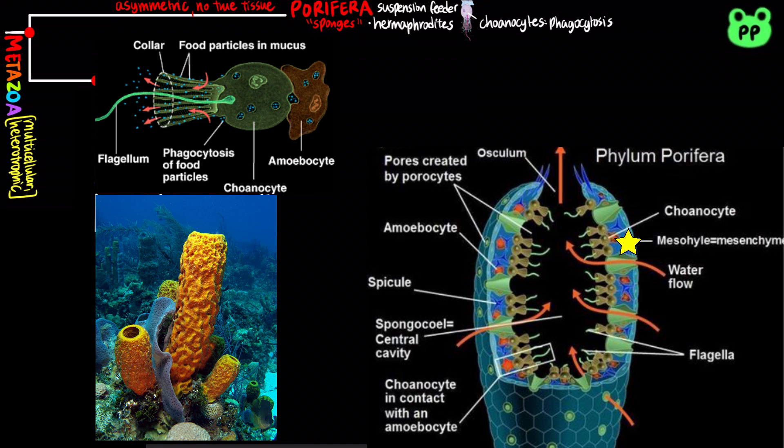Many choanocytes are attached to amoebocytes, which are found in the mesohyle and contain pseudopods that function in transporting nutrients and producing materials for skeletal fibers known as spicules.